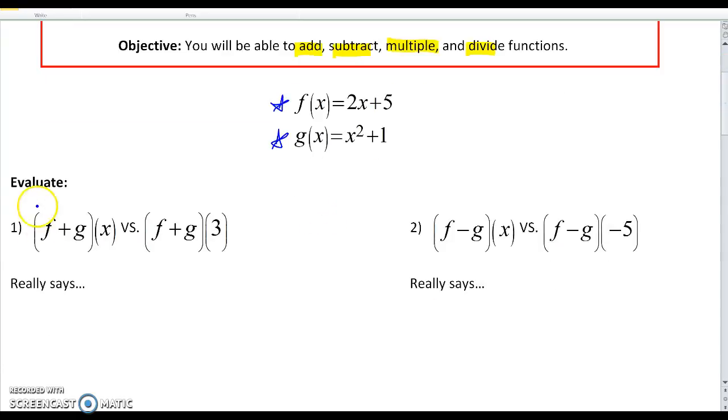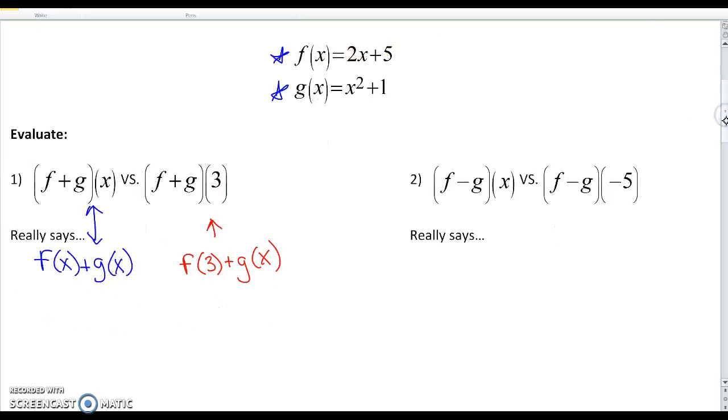So to start, we're going to take a look at this notation here. So number one, you have f plus g and an x, and then there's another one that says f plus g with a 3. What this really says, if you see this notation, is you're going to take f of x and add g of x. These two notations mean the same thing. Now the other example is very similar, except you have a 3. So this says you're going to take f of 3 and add g of 3. So really what you're doing is you're just combining the functions, adding them together, and combining like terms if you can.